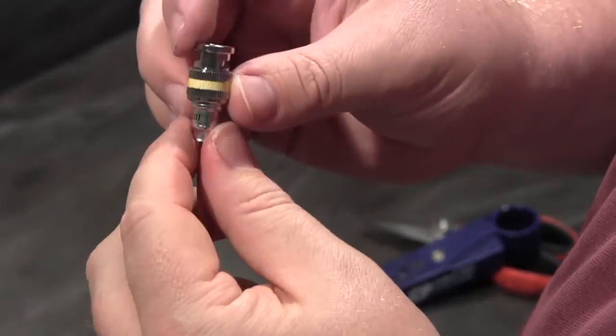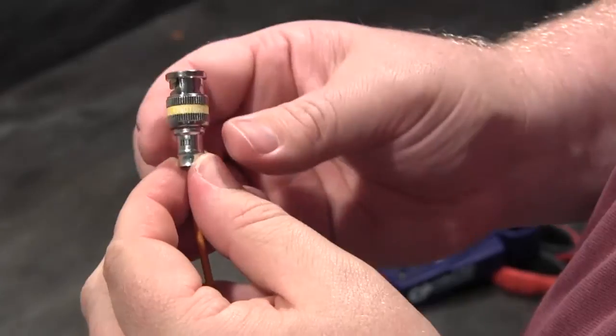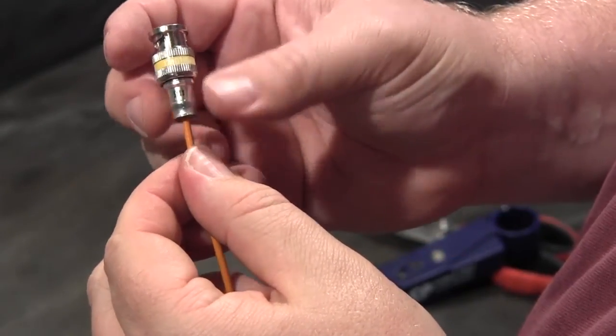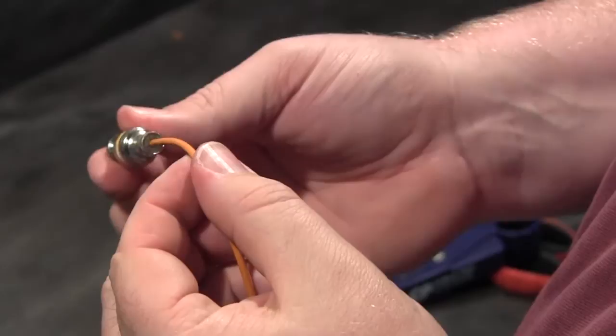Now I have a finished termination that I know won't have any shorts because I've removed the foil and the braid all the way back before inserting into the cable.